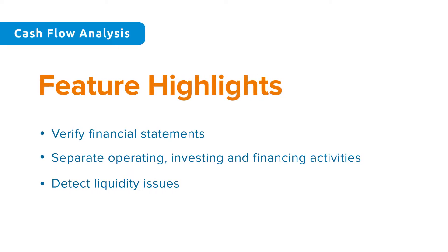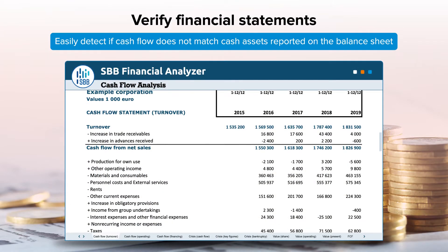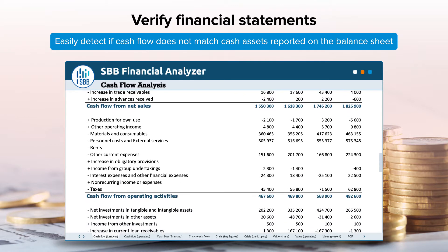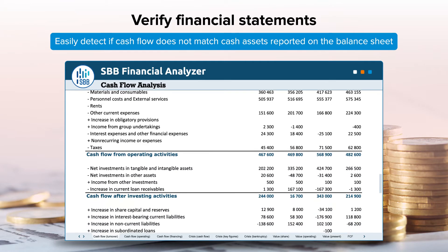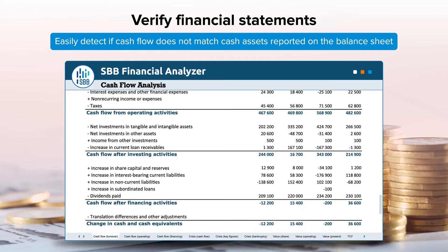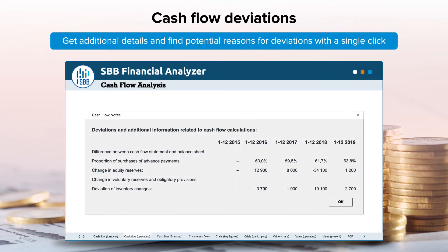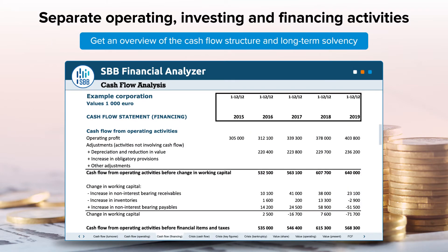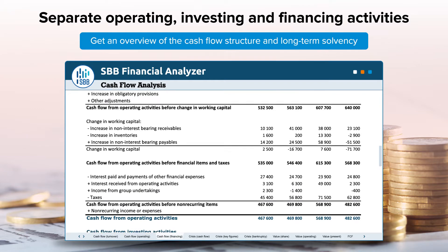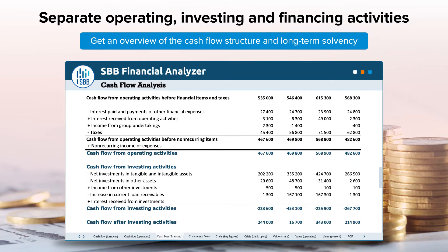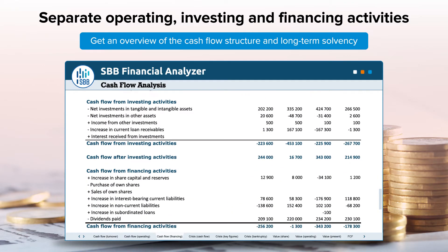SBB Financial Analyzer provides instant results with automated cash flow analysis. The cash flow statement enables quick verification of a financial statement by comparing changes in cash and cash equivalents. Additional details and potential root causes for cash flow deviations are available with a single click.